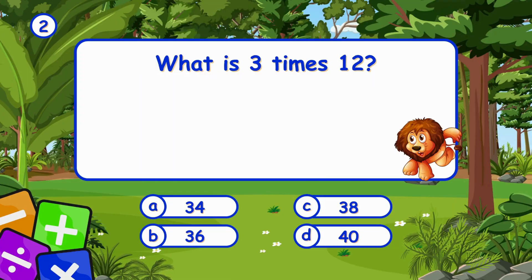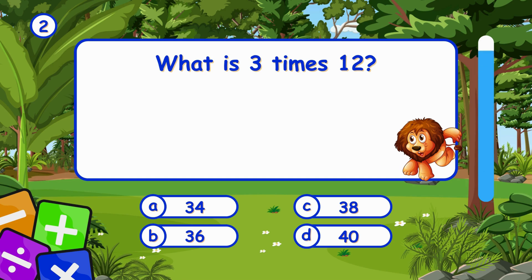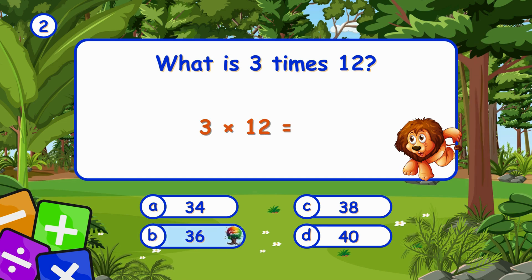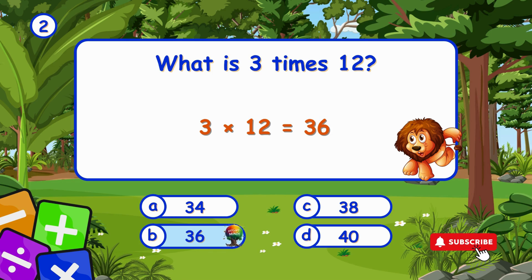What is three times 12? It's B, 36. Three times 12 is 36.